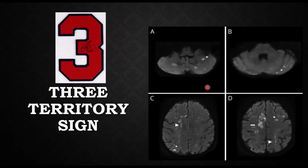Hello and welcome to another episode of Stroke Rounds. In this episode we will discuss an important radiological sign in neurology — the Three Territory Sign. In simple words, it's bilateral anterior and posterior infarcts seen on diffusion imaging.